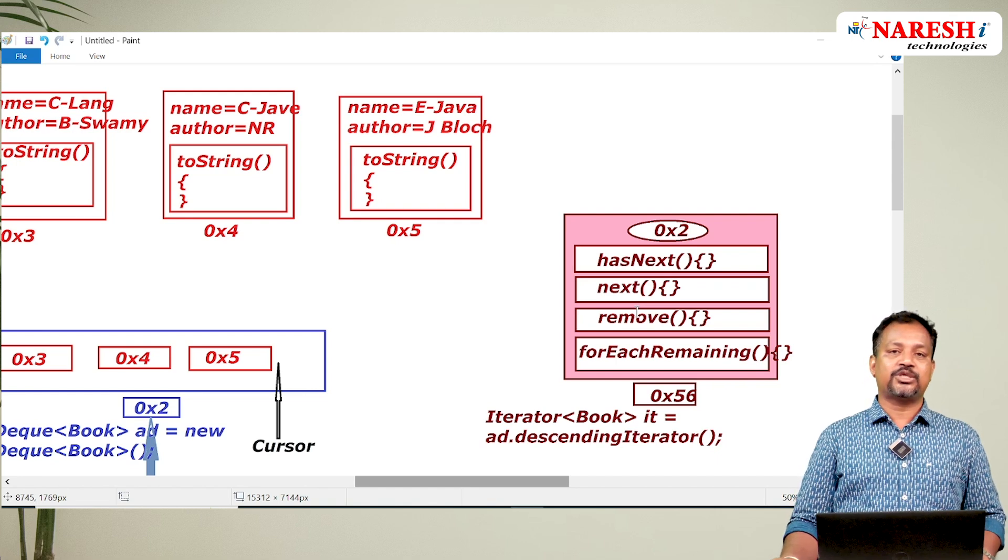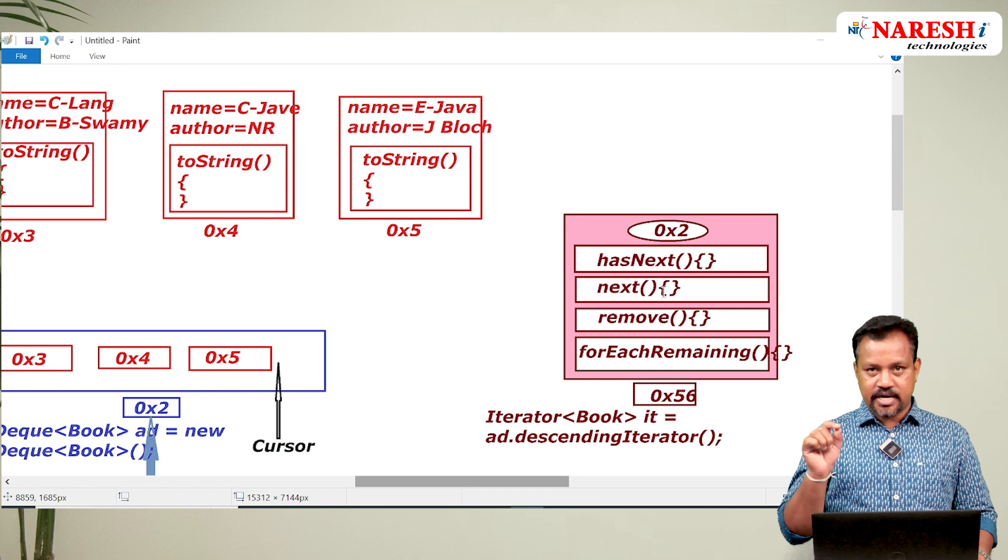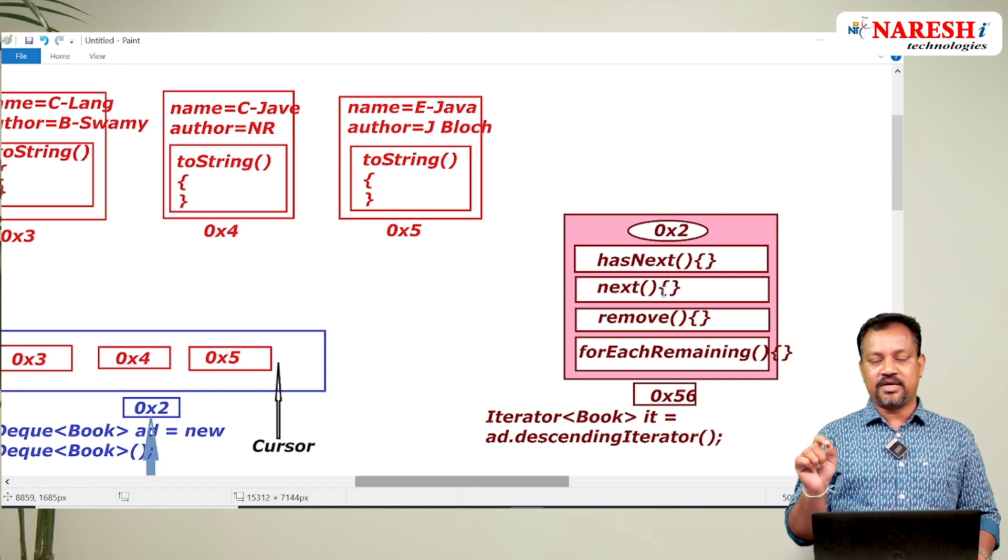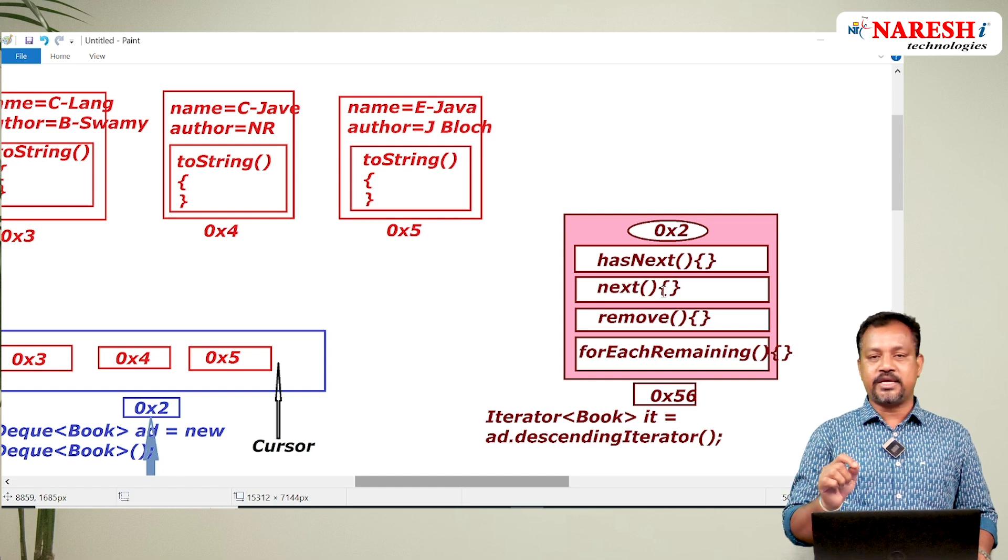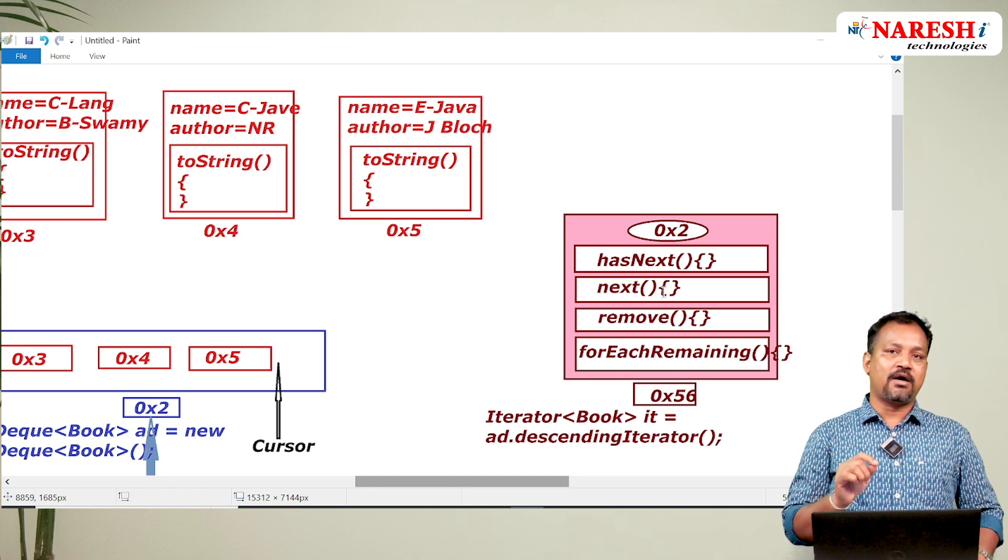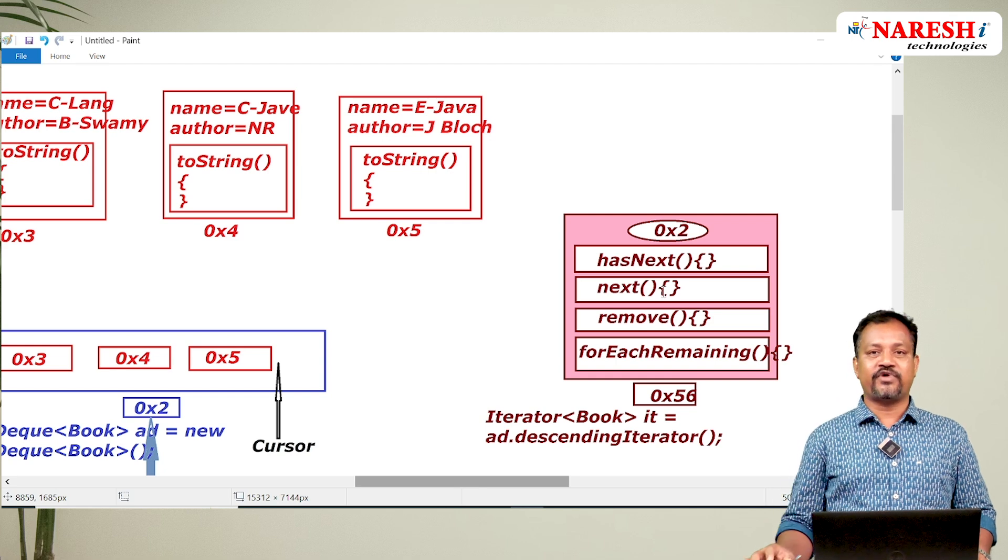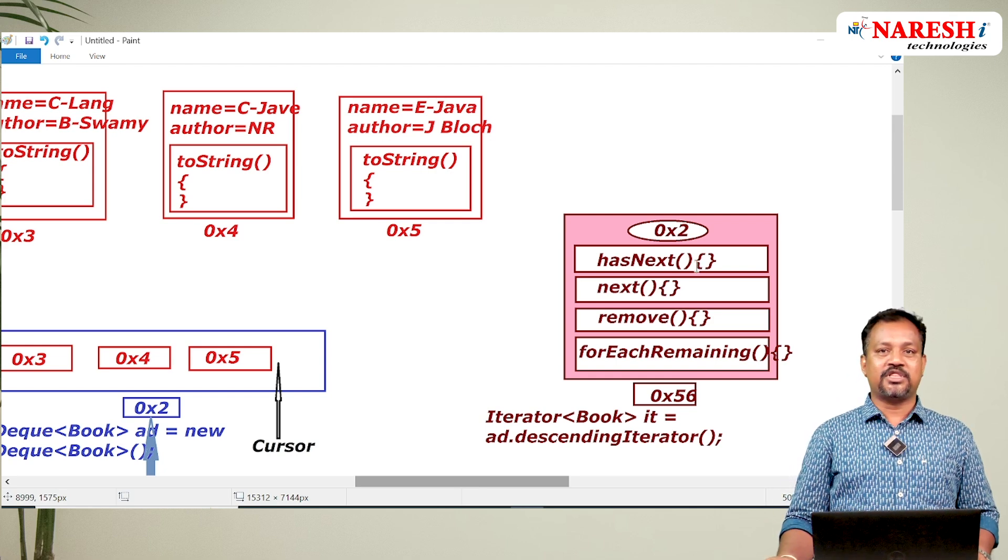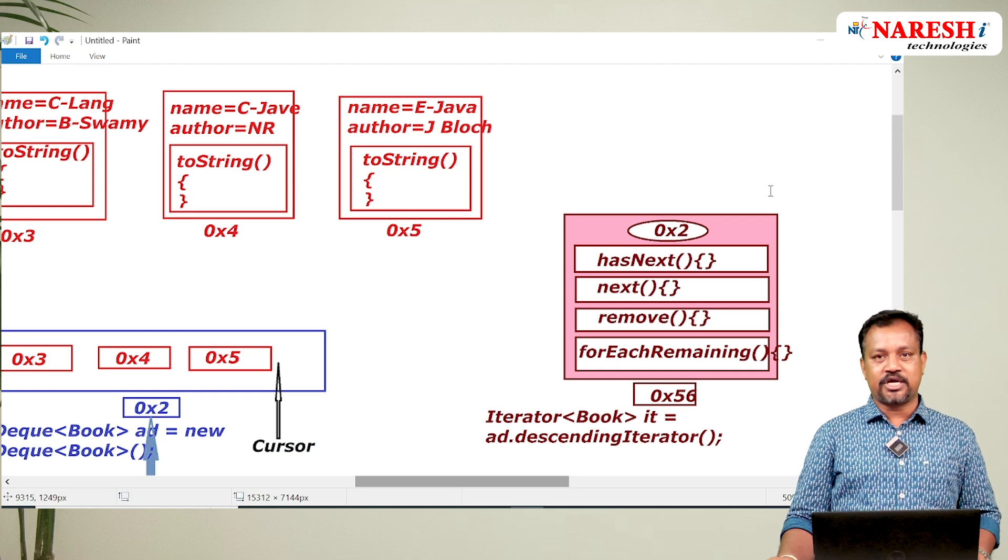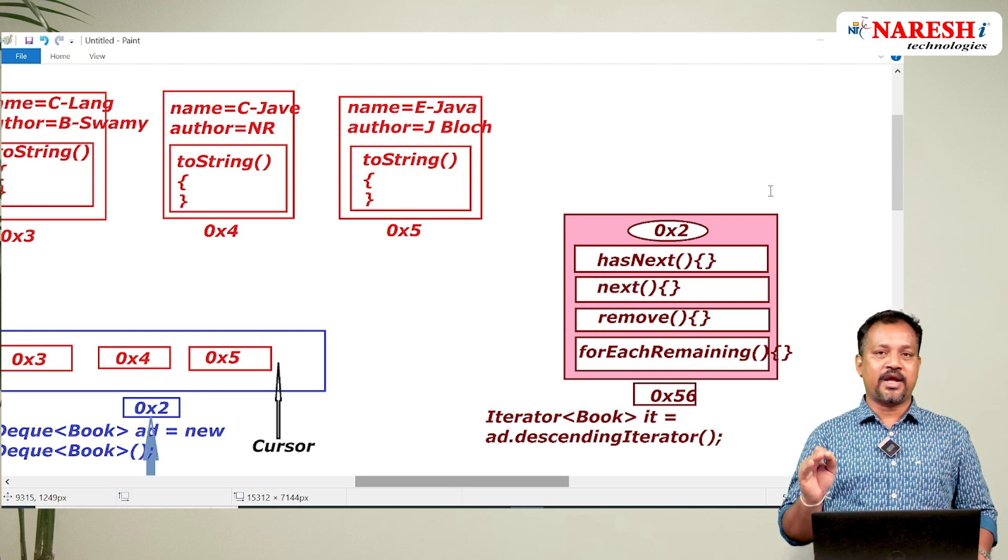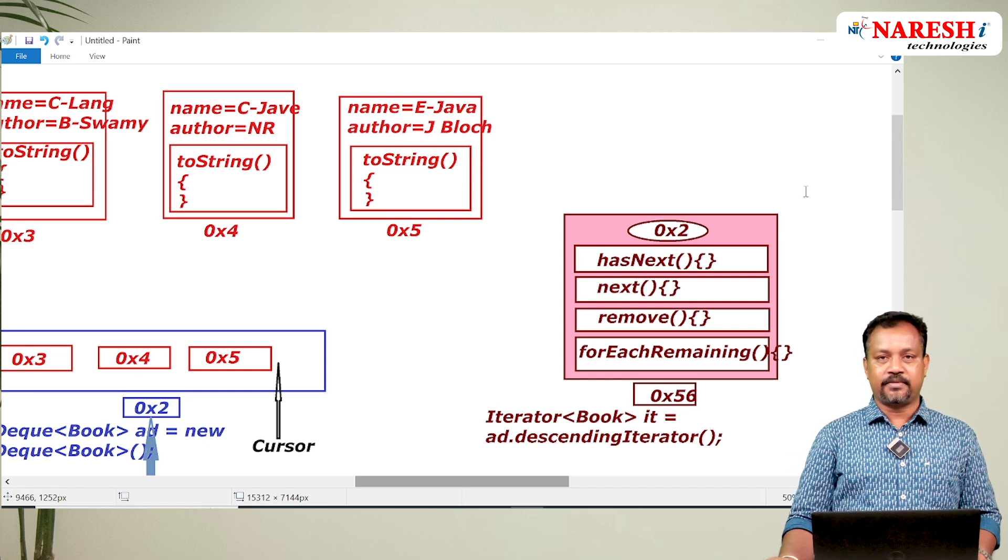And this iterator has four methods: one is hasNext method, one is next method, one is remove method, and one is forEachRemaining method. This forEachRemaining method parameter is java.util.function.Consumer. Consumer is one functional interface providing one abstract method known as accept. Whenever we pass one lambda expression as parameter to forEachRemaining method, the accept method is going to run internal to forEachRemaining method.